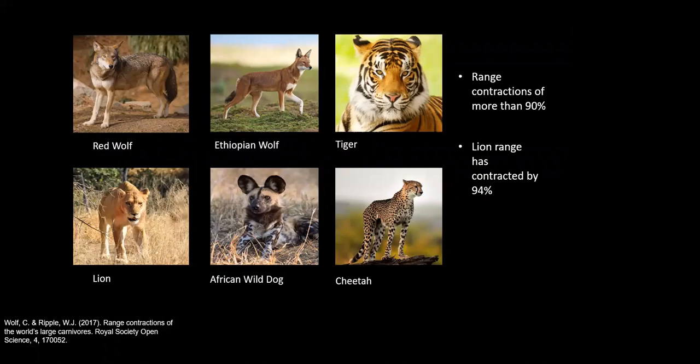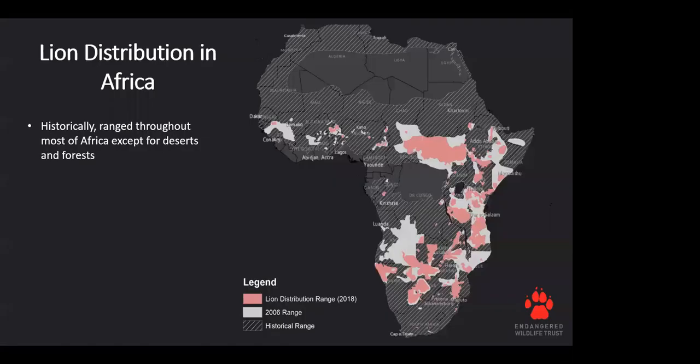Lions have seen the fourth largest range contraction of all carnivore species, with their historic range contracted by 94%. These species face numerous threats such as habitat loss, loss of prey, direct poaching, and conflict with people, and these threats have largely led to their significant population decline.